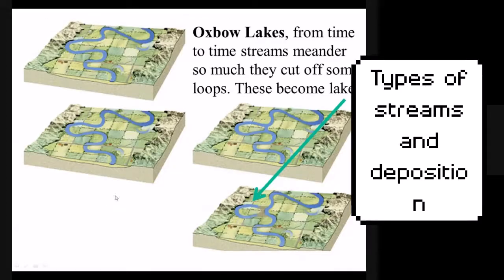Oxbow lakes can form from meanders as the outside edge of a river erodes, because the outside edge is moving the fastest. Sometimes those outside edges meet — for example, this edge and this edge grow and grow and eventually they touch. When they touch, the river can more easily flow directly across, and it completely cuts off that left meander. That left meander can then form an oxbow lake.